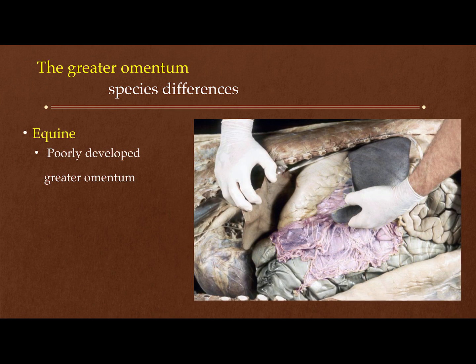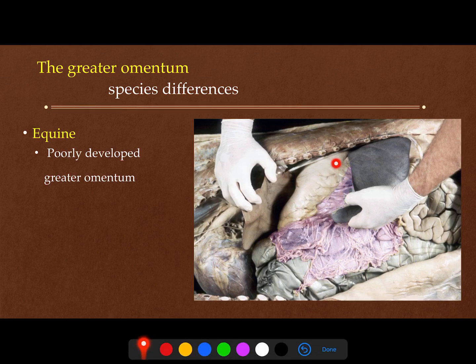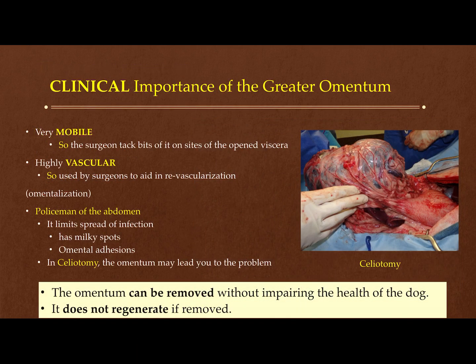In contrast, in equines the greater omentum is very short. Here is the stomach, here is the spleen, and this is the greater omentum. This part of the greater omentum is called the gastrosplenic ligament. The greater omentum is not very long or large compared to the dog or the ruminant — it is poorly developed in equines.